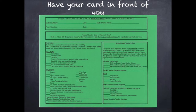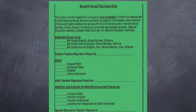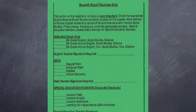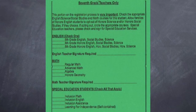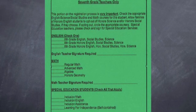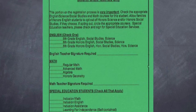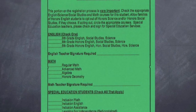Right now, I would like you to print your name where it says student name printed. That way, if you should lose your card, we can be sure to get it back to you. Let's begin looking at the right side of the card where it says 7th grade teachers only. Your teacher's signatures on this side of the card will indicate the proper placement for English and Math. Be sure to have your English teacher sign where it says English teacher signature required and your math teacher sign where it says math teacher signature required. That is all you will need to do on this side of the card.